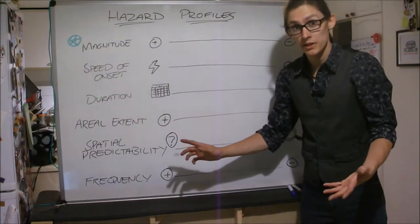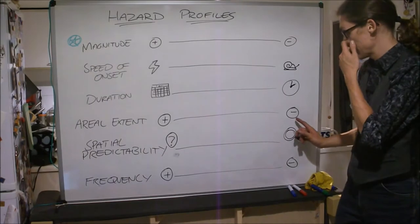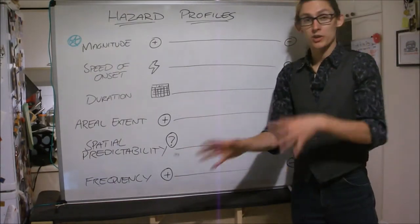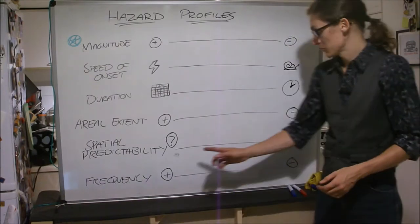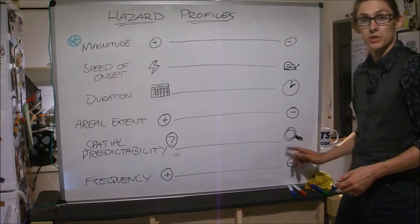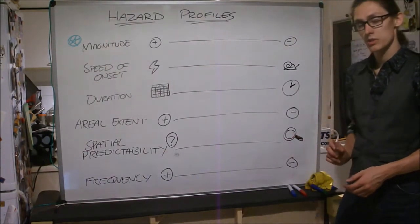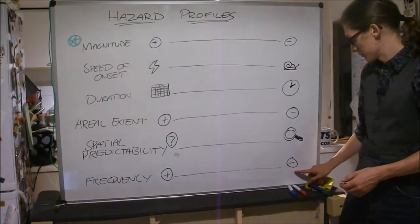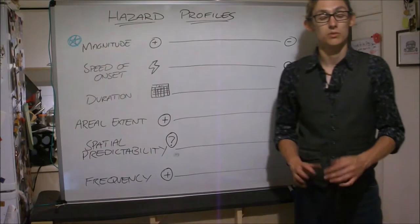Large area being affected down to small area. Random spatial occurrence, just can't figure it out, as opposed to very pinpoint exact. And very, very frequent down to not frequent at all.